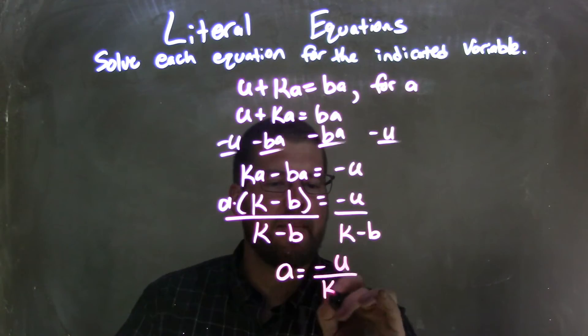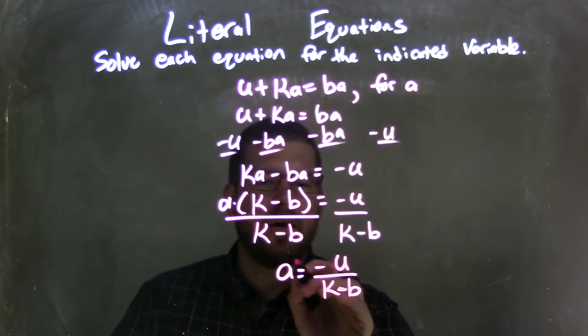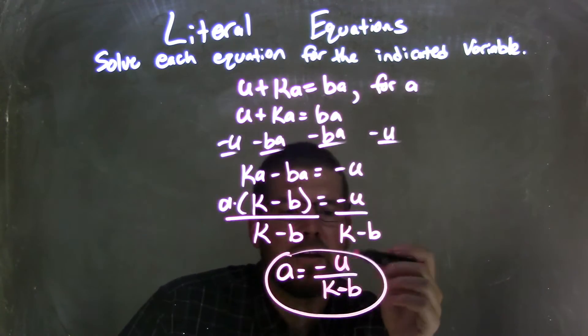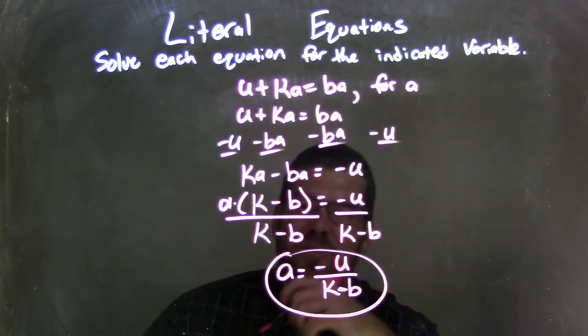negative u over k minus b, and there we go. A is all isolated. And so we have a equals a negative u over k minus b, and that is our final answer.